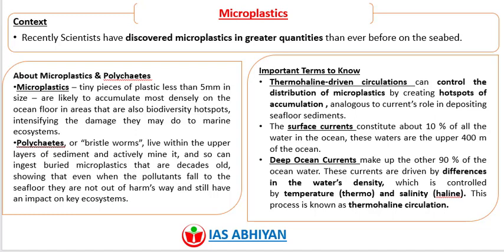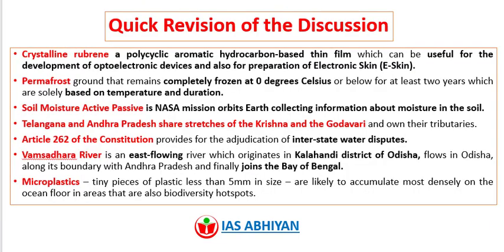This shows that even when pollutants fall to the seafloor, they are not out of harm's way and still have an impact on key ecosystems. An important term to know: thermohaline-driven circulations control the distribution of microplastics by creating hotspots of accumulation, analogous to currents' role in depositing seafloor sediments. Surface currents constitute about 10% of all the water in the ocean — the upper 400 meters. Deep ocean currents make up the other 90%, driven by differences in water density controlled by temperature and salinity, a process known as thermohaline circulation.